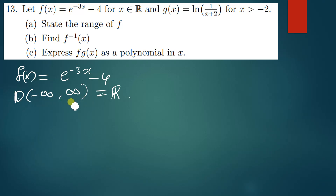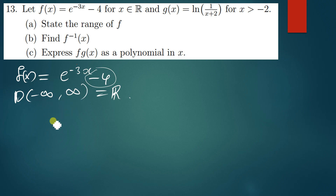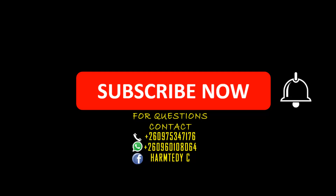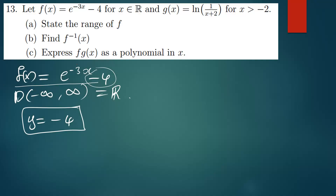The range of this function — when you sketch this graph you discover that you're going to have a horizontal asymptote of negative 4. So the horizontal asymptote of this function is going to be negative 4. If you don't know how to sketch the graph of such a function, you can request a video — just text me on WhatsApp and I'll send it to you. So the horizontal asymptote of f of x is y equals negative 4.